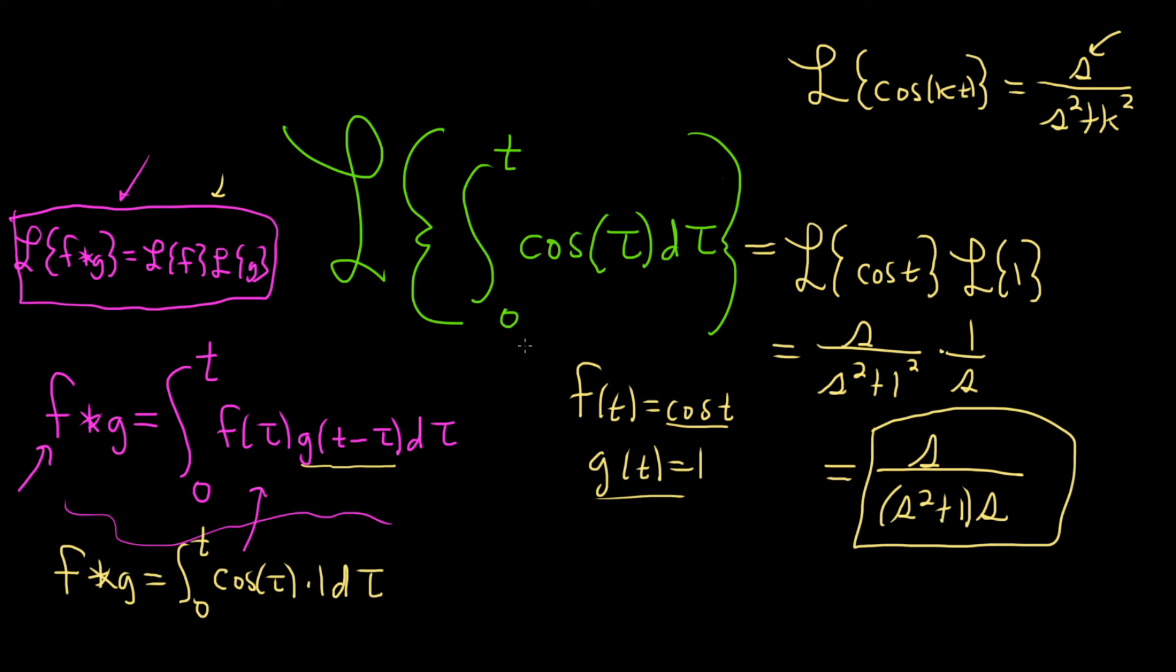Another way to do this would be to simply integrate. You could integrate this and work through it. In fact, let's try it. Why not? If you integrate cosine, you get sine. That's because the derivative of sine is cosine.